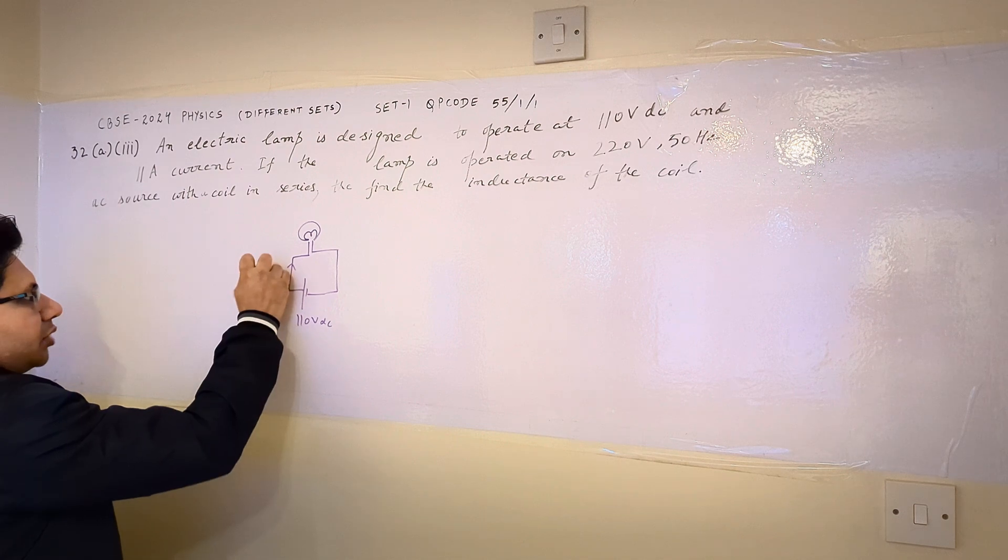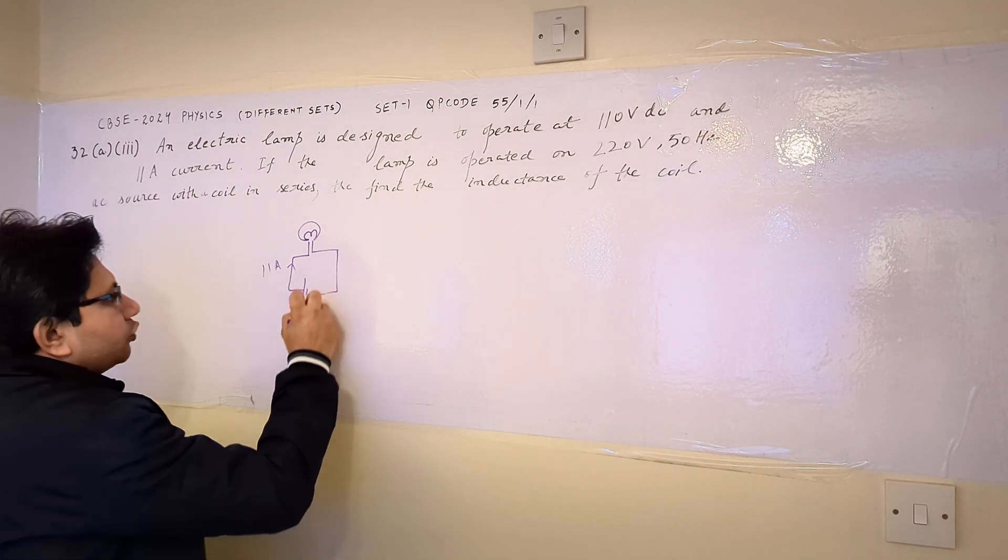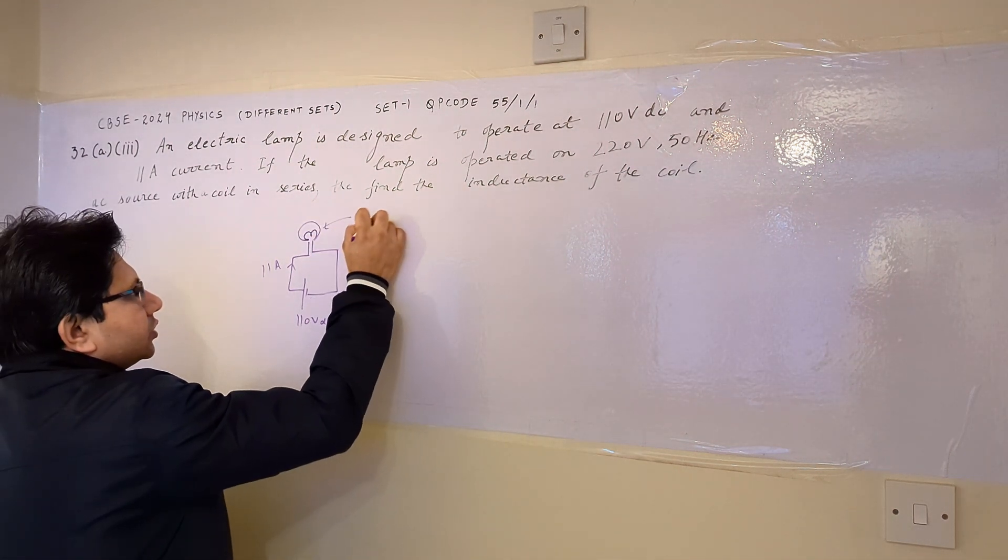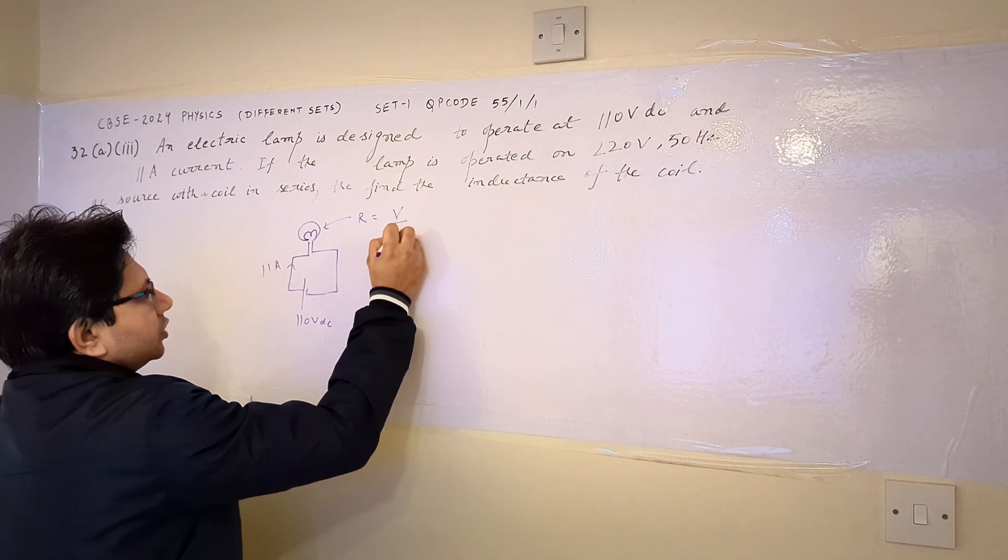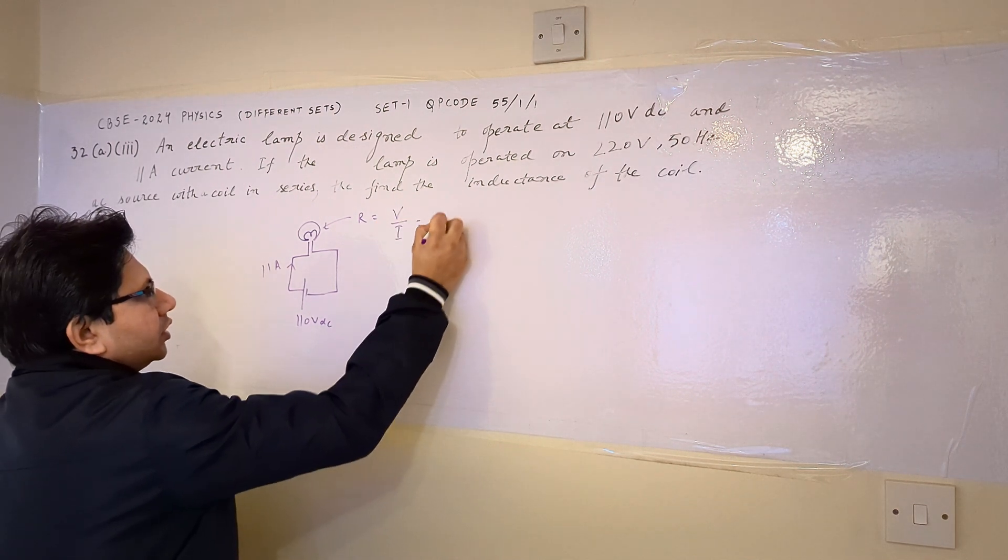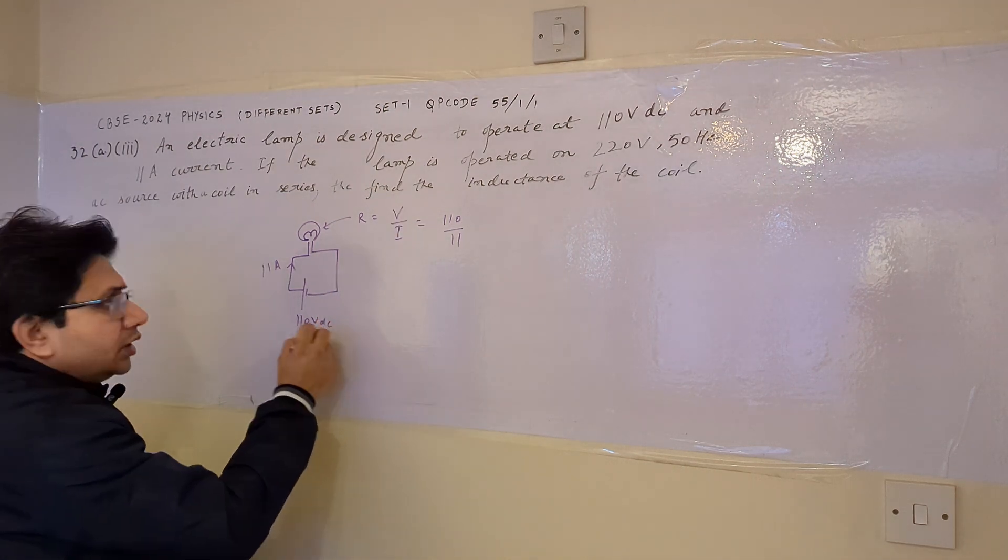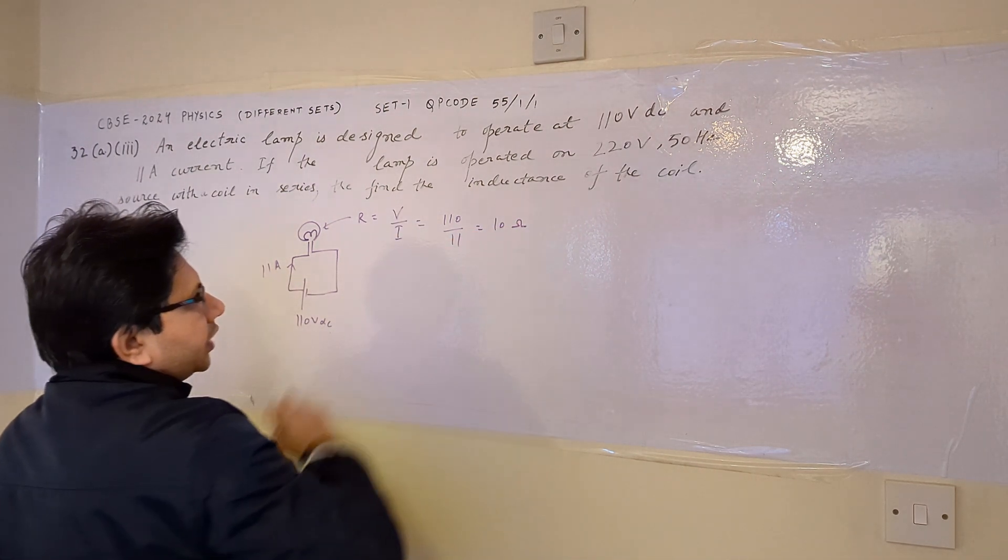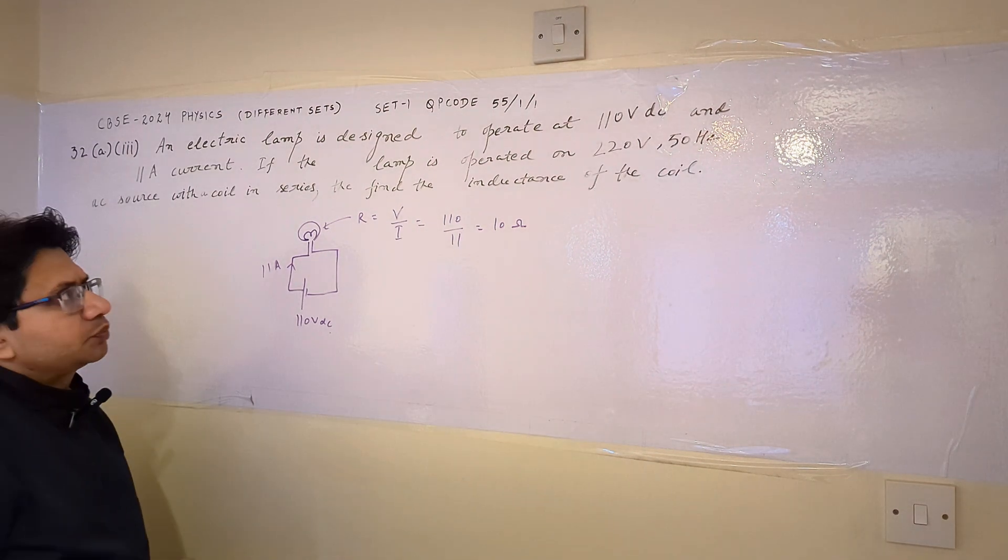So when this signal is applied across it, then 11 ampere current flows through it. From this data, we can calculate the resistance of this lamp. Resistance is voltage upon current. So 110 upon 11 - voltage is 110 volt and current is 11 ampere. This comes out to be 10 ohms. So 10 ohm is the resistance of this bulb.